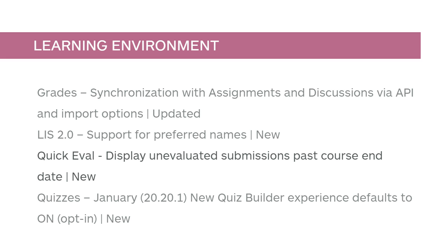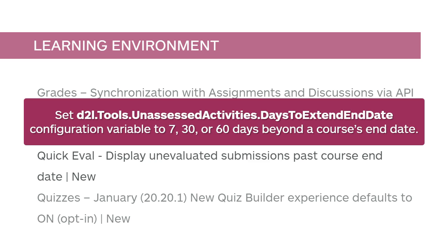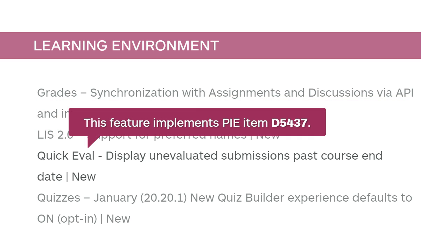You can now extend the visibility of unevaluated learner submissions in QuickEval past the end date of a course. To enable, set the D2L, Tools, Unassessed Activities, Days to Extend End Date configuration variable to 7, 30, or 60 days beyond a course's end date. This feature implements PIE item D5437.